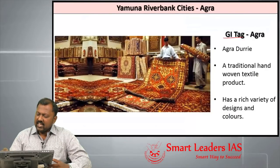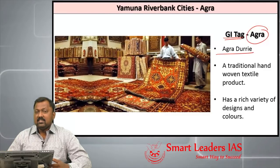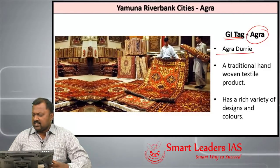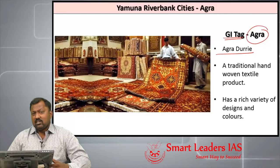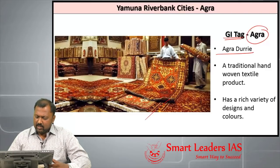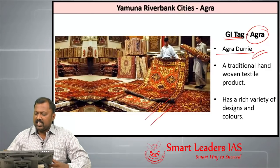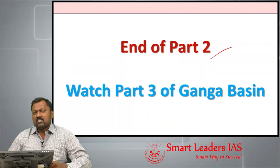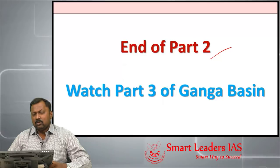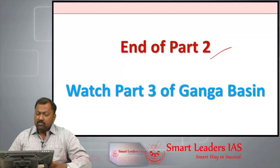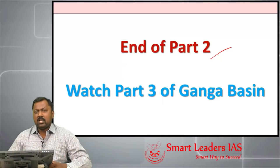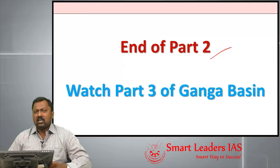Agra Dhurrie is a rug with a GI tag — a traditionally hand-woven textile product known for its rich variety of designs and colors. We have come to the end of part 2 of this Ganga Basin series. In part 2 we covered the whole of Yamuna River. Part 1 covered Ganga River from its origin to Allahabad. In part 3, we will start again from Allahabad along the Ganga. This is a four-part series on the Ganga Basin.